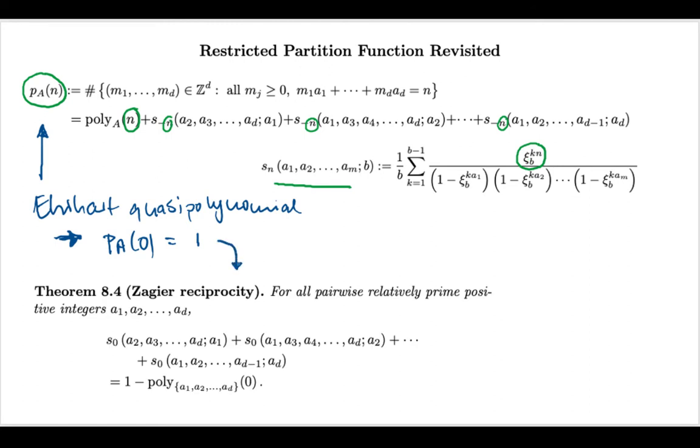Yeah, so if we now forget about that there was this complicated restricted partition function over here, and just use the fact that its constant term as a quasi-polynomial is 1, we can now look at this, if you want, from the right-hand side and get a relation for Fourier-Dedekind sums where this parameter n is 0. We call this Zagier reciprocity because this is a reformulation of a famous theorem by Don Zagier about generalized Dedekind sums.